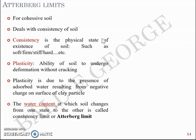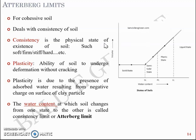The water content at which soil changes from one state to another is called a consistency limit or Atterberg limit. An Atterberg limit is simply a water content — a percentage Mw/Ms — at which soil changes from one state to another. The states can be liquid, semi-solid, solid, or plastic, and soil's behavior changes between these states at a particular water content depending on the properties of the soil. That particular water content is called an Atterberg limit.